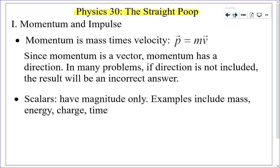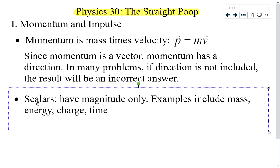You're expected to know the difference between scalars and vectors and be able to provide examples of each. Scalars have a magnitude but no direction. Examples include mass, charge, time, and energy. Potential difference is also a scalar. Students sometimes want to call energy or potential difference a vector, but energy does not have a direction — it makes no sense to say something has 320 calories east.